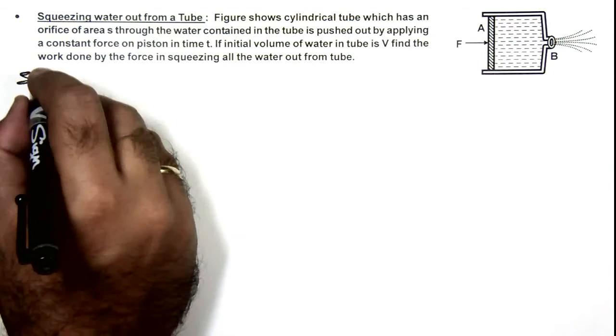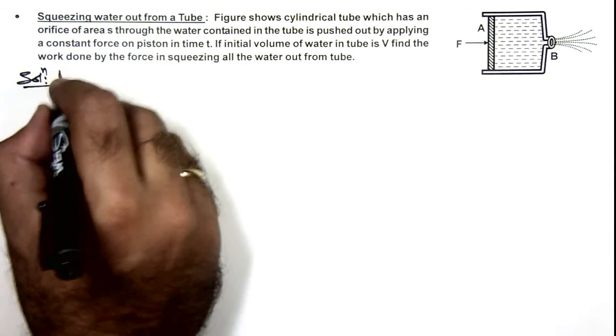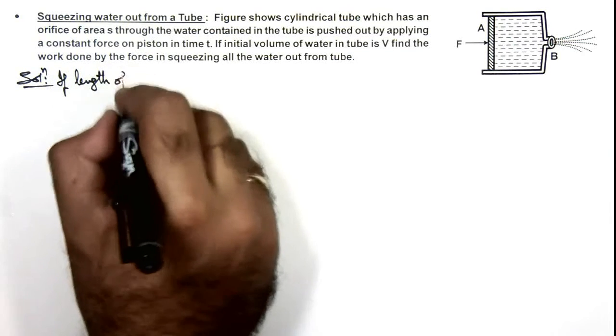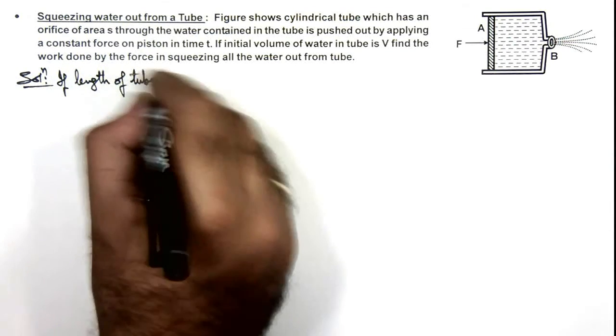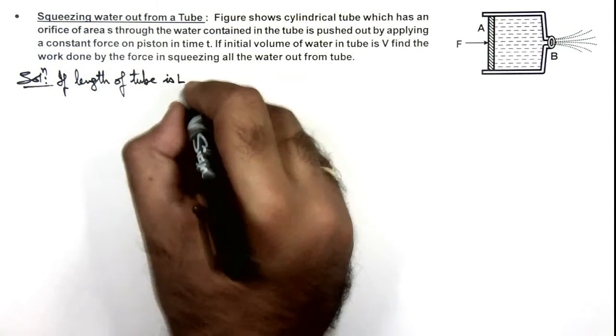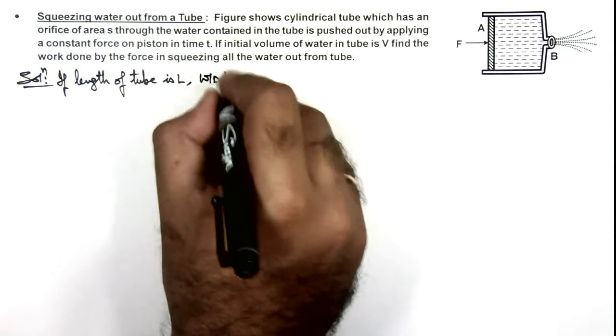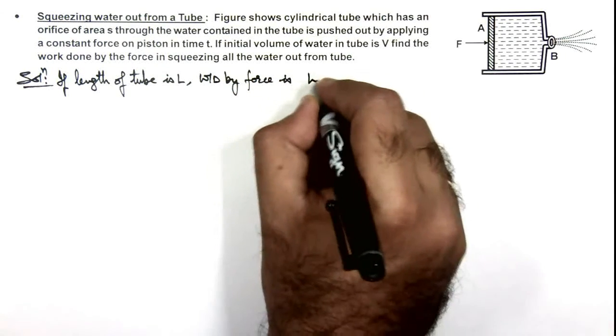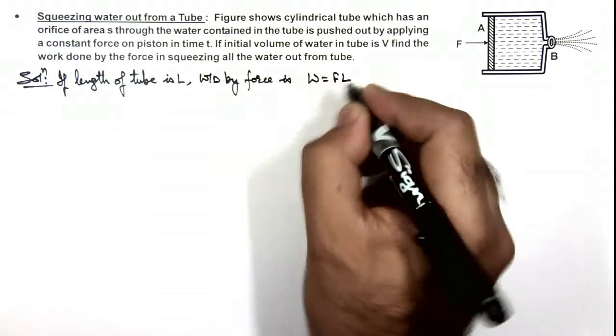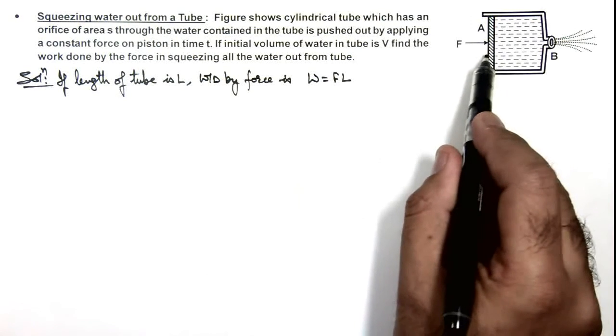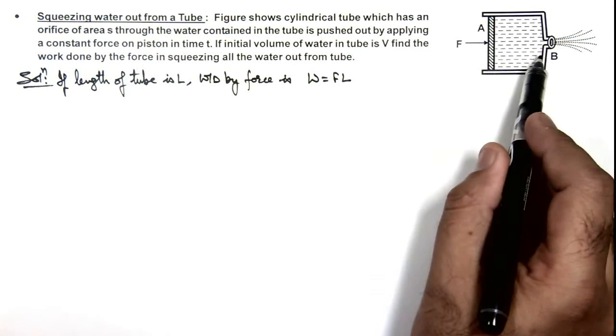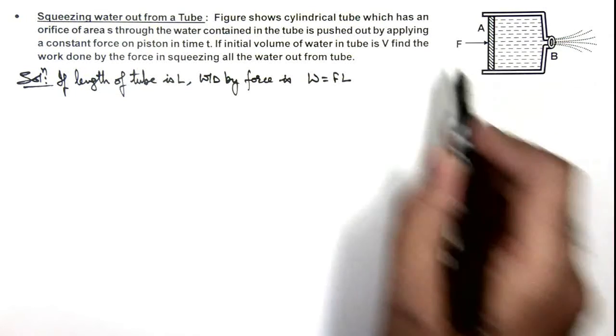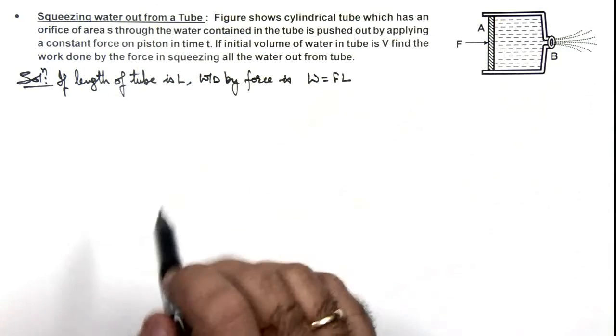Here we can directly write: if the length of the tube is L, then the work done by the force is FL. When the force will squeeze the whole of the liquid out, the total length L will give us a work done F into L.